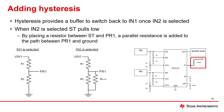To add this buffer, the ST pin can be used. This pin pulls to ground when N2 is selected. By connecting a resistor between ST and PR1, a parallel resistance is added to the path between PR1 and ground, pulling PR1 further down when N2 is selected. The criteria to switch back to VN1 after VN2 is selected is shown boxed — by pulling PR1 further low, this design adds a buffer to the switch back to VN1.